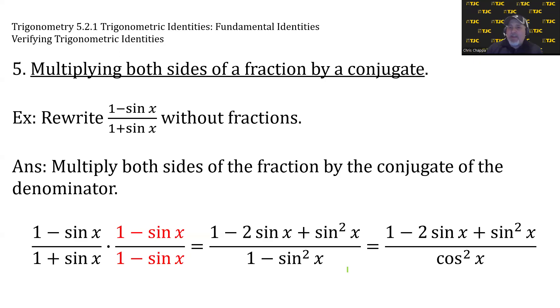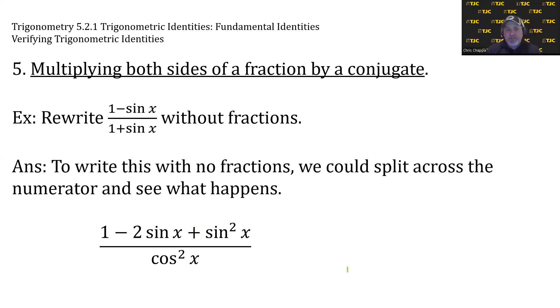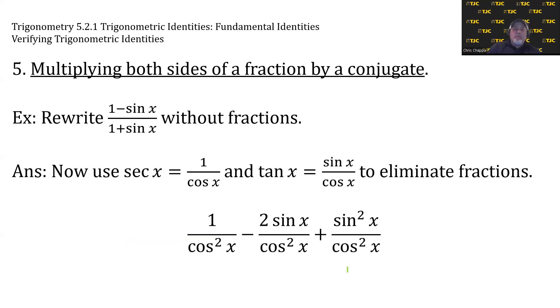Now, we haven't gotten without fractions yet, but now the denominator has one term. That's critical because now we can split across the numerator. So let's do that. Each piece of the numerator gets its own denominator. Okay, now what are we going to do with this? Well, with this, we could capitalize on the reciprocal identity, sec x equals 1/cos x, and tan x equals sin x/cos x to eliminate all the fractions. These are the two identities that involve cosine in a denominator.